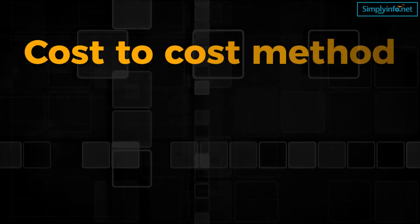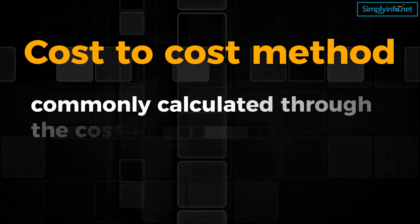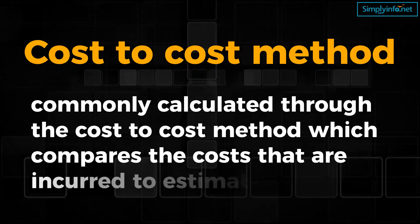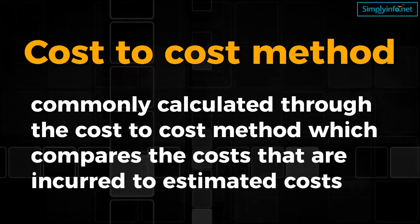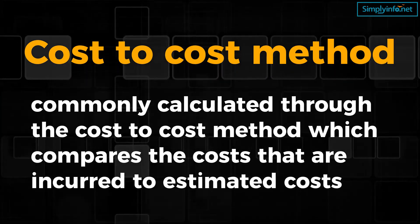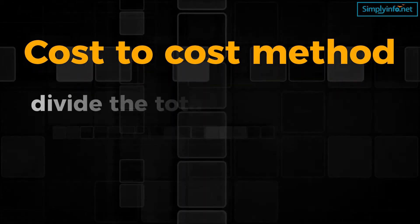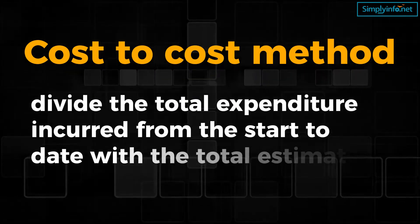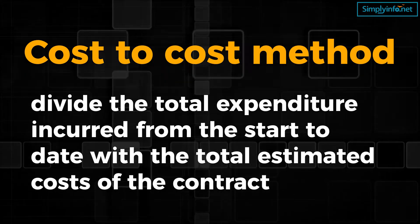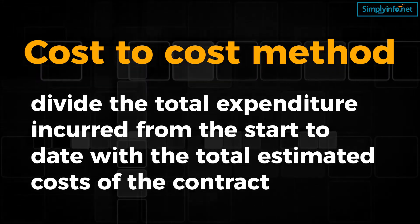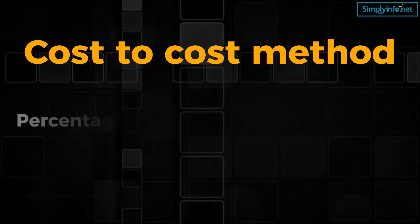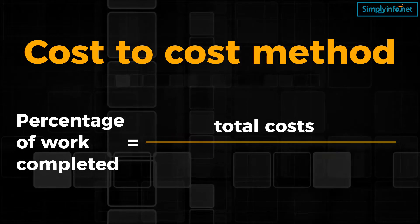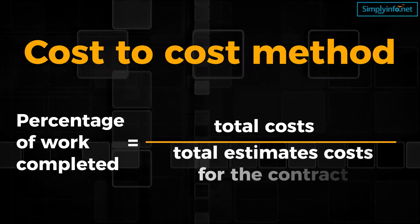Cost-to-cost method: Percentage of completion is commonly calculated through the cost-to-cost method, which compares the costs incurred to estimated costs. To estimate the percentage of completion, we divide the total expenditure incurred from the start to date by the total estimated costs of the contract. The formula is: Percentage of work completed = Total costs incurred ÷ Total estimated costs for the contract.